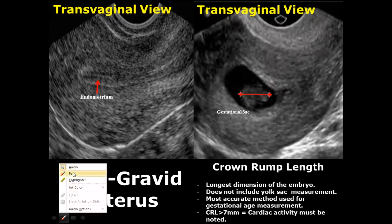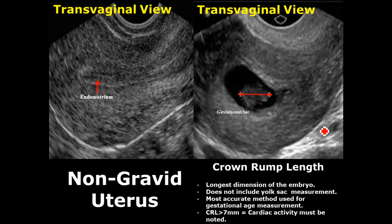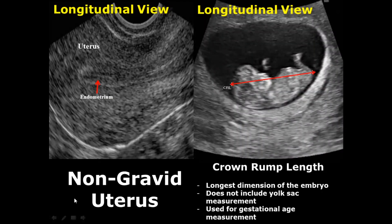The crown-rump length is the longest dimension of the embryo and is the most accurate method used for measuring gestational age. It is measured by placing one caliper on the head of the embryo and the other caliper on the end of the body of the embryo. If the CRL is more than 7 millimeters, cardiac activity should be noted. Here is another image showing how to calculate the crown-rump length.